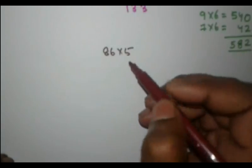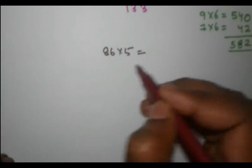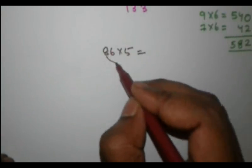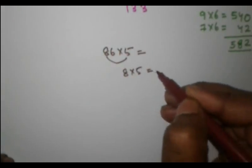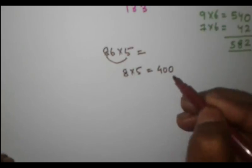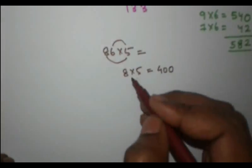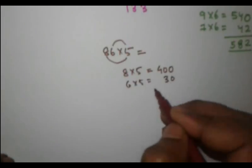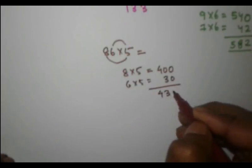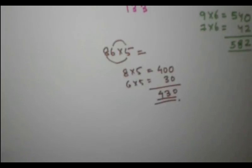What will be the result? We will multiply 8 into 5, which is equal to 40. We will add a 0 from our side. Then 6 into 5 is equal to 30, so the answer is 430. Thank you friends.